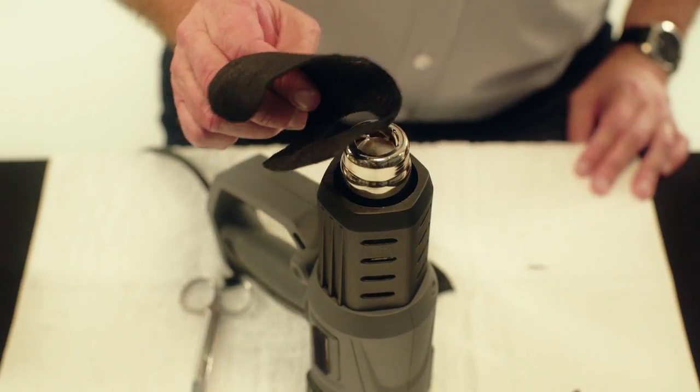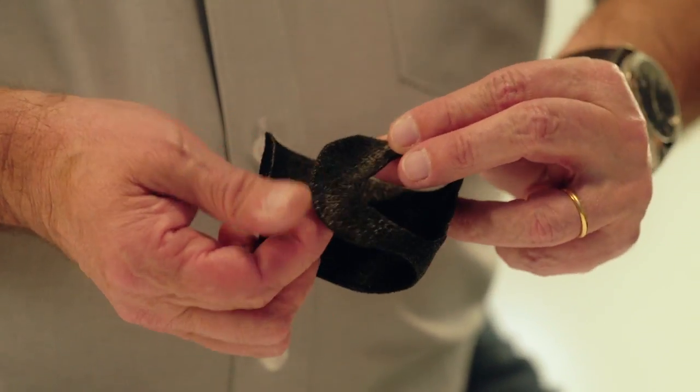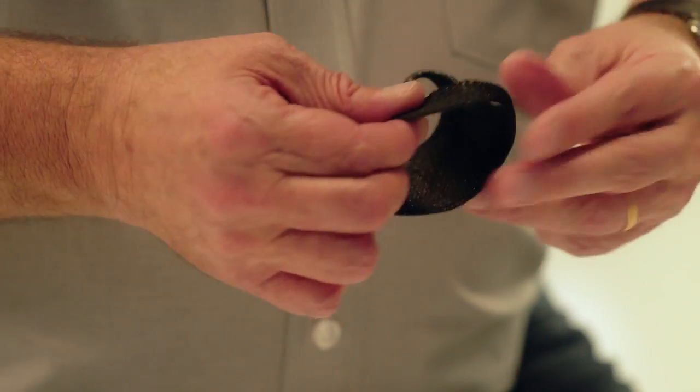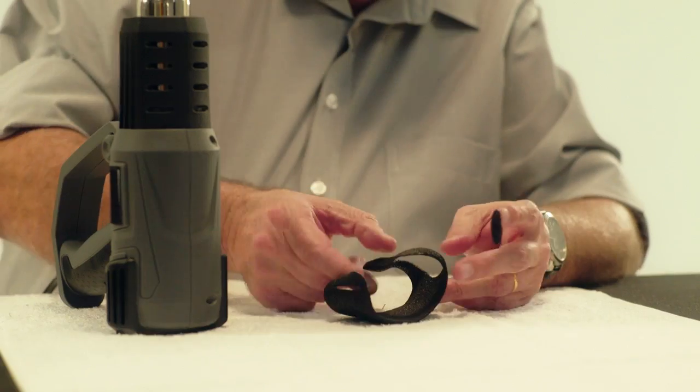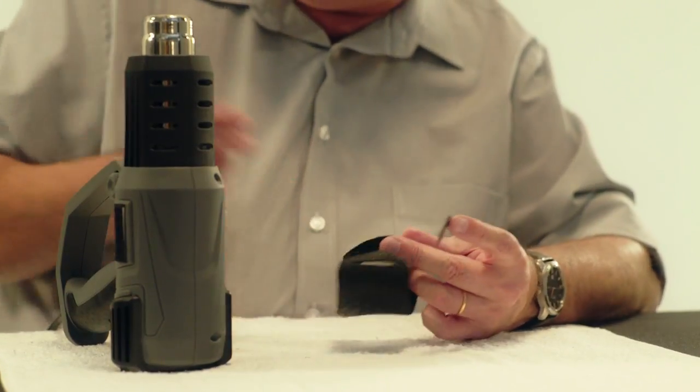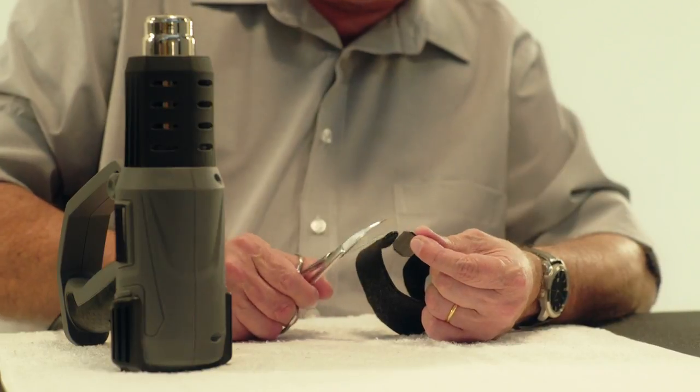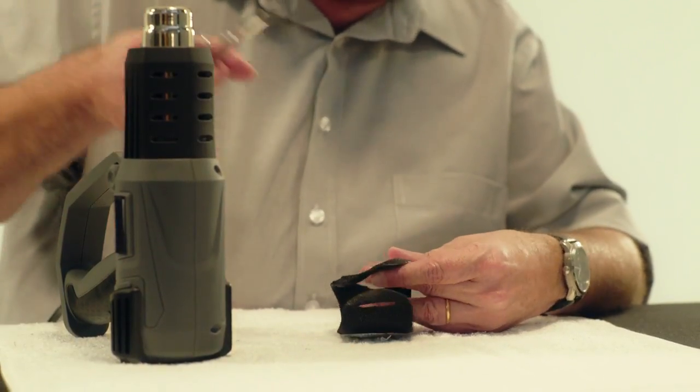Heat the edges of the thumb opening and fold outwards and smoothen. Attach the self-adhesive Velcro hook by heating the orthosis on the dorsal surface and the glue side of the Velcro hook with the heat gun and press firmly together.